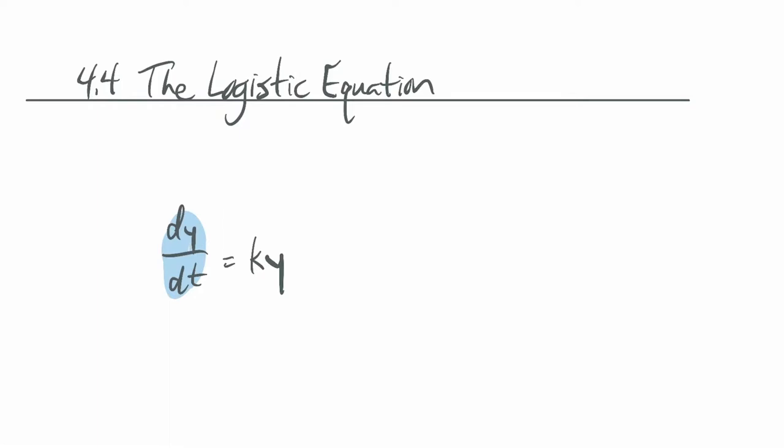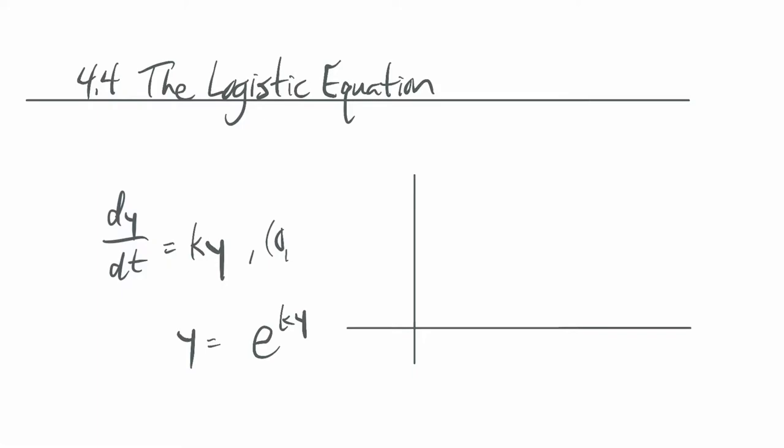So in previous videos, we've dealt with a few different differential equations to model different situations. So one example was dy/dt equals ky, so that the rate of change in y with respect to time is proportional to y itself. And when we solve that, we got things of the form y equals Ae to the ky power. And this would be like uninhibited exponential growth.